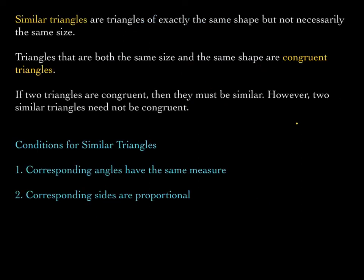Now we have the notion of similar triangles — triangles of exactly the same shape but not necessarily the same size. Triangles that are both the same size and shape are called congruent triangles; congruency is stronger. If two triangles are congruent, you can pick one up and place it on top of the other and they coincide. Similar triangles are not necessarily the same size but do have the same shape. If two triangles are congruent, then they must be similar, but two similar triangles need not be congruent.